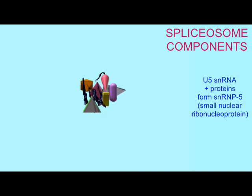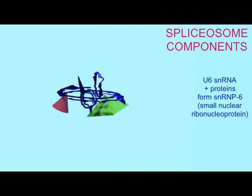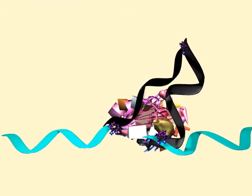Some of these proteins are called SM proteins, after a patient named Smith, who suffered from an autoimmune disease, and autoantibodies were produced against these proteins. The autoimmune disease lupus can involve antibodies against spliceosomal proteins.